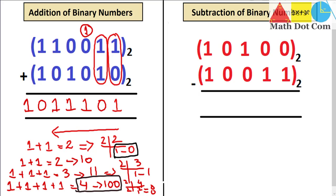Now we move towards the subtraction of binary numbers. Subtraction of binary numbers is the same as in decimal. We must ensure that the number in the top row is greater than the number at the bottom. Starting from right to left again, we subtract bit by bit.